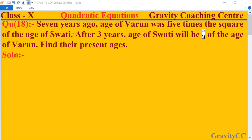So what do we need to find? We need to find Varun and Swathi's present age. Seven years ago, Varun's age was five times the square of Swathi's age, and after three years, Swathi's age will be two-fifths of Varun's age.